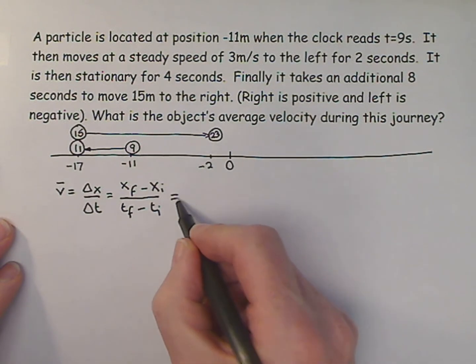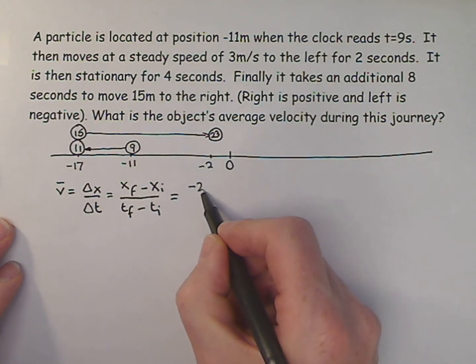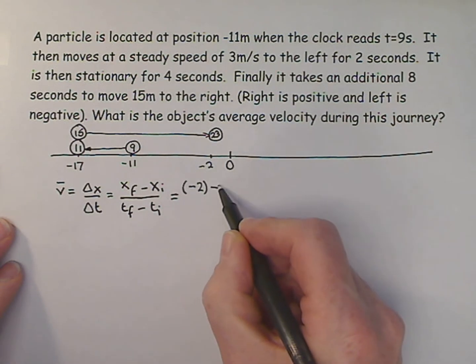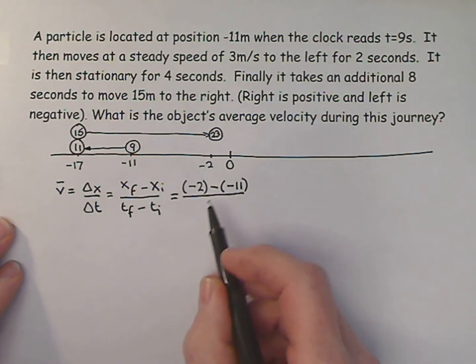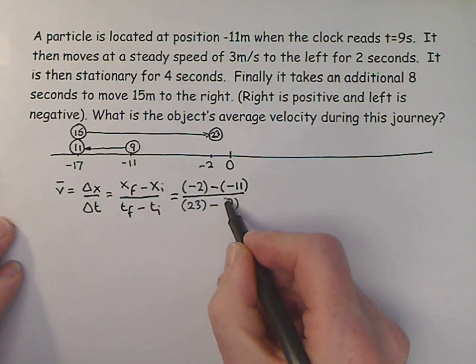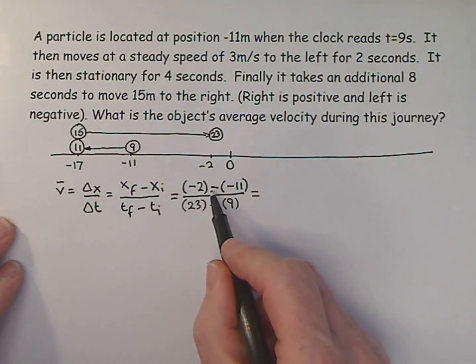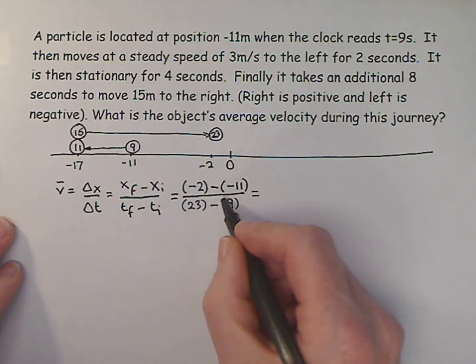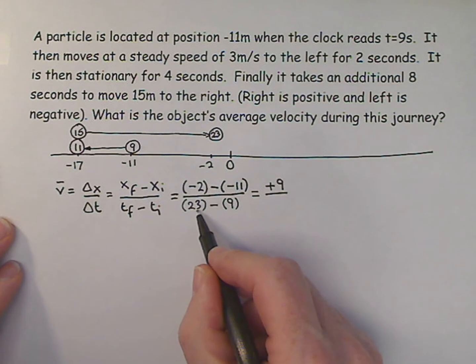And that is equal to... my final position is minus 2, my initial position was minus 11. My final time is 23, and my initial time was 9. So this equals minus 2 minus minus 11 is minus 2 plus 11, which is plus 9 divided by 23 minus 9, which is going to be 14.